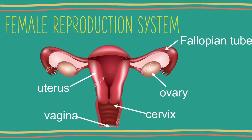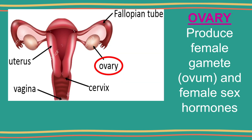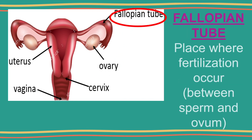The diagram shows the structures of the female reproductive system. This is the ovary. Every woman has a pair of ovaries. The ovaries produce ovum and female sex hormones, which are estrogen and progesterone.